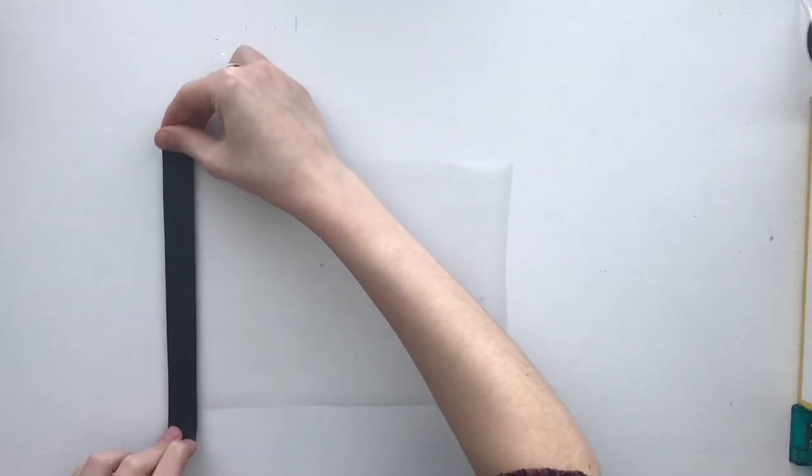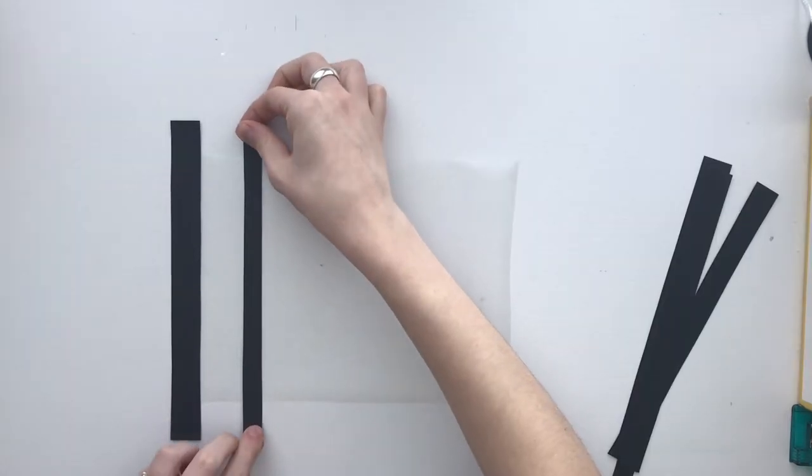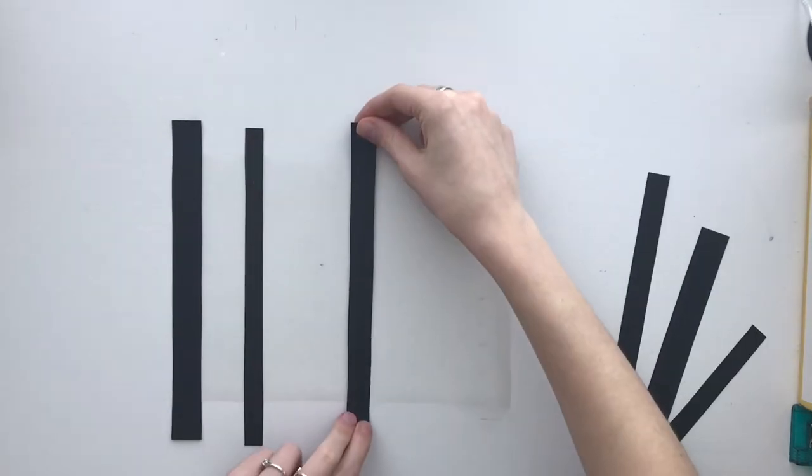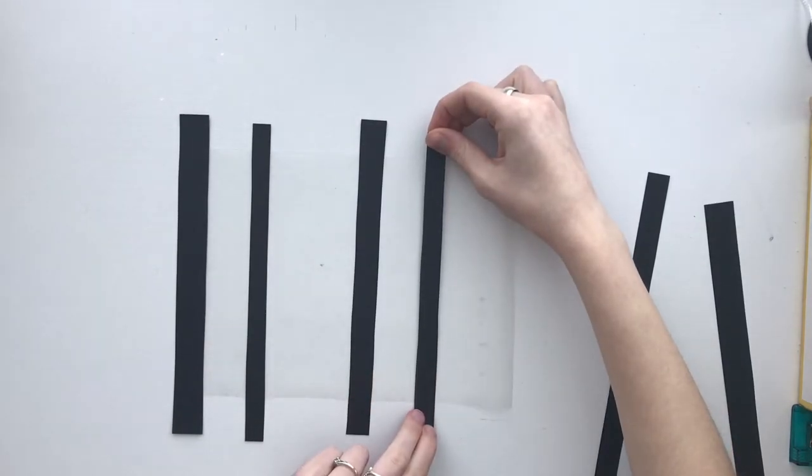Using the shorter strips of cardstock, position them vertically across the contact paper, making sure that each strip is pressed onto the sticky surface. It is okay that the strips of paper are longer than the contact paper.